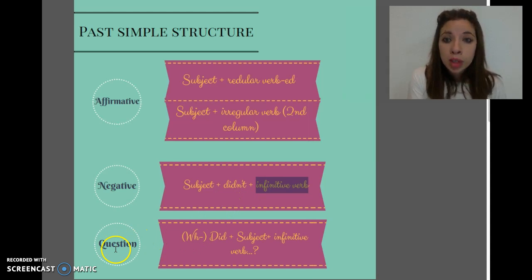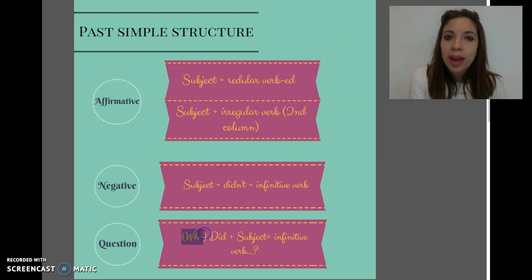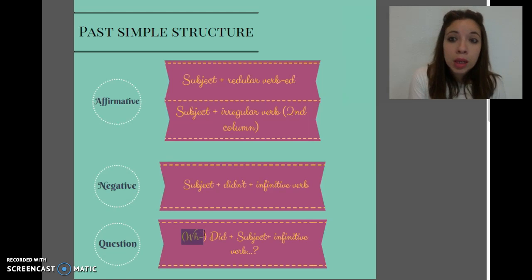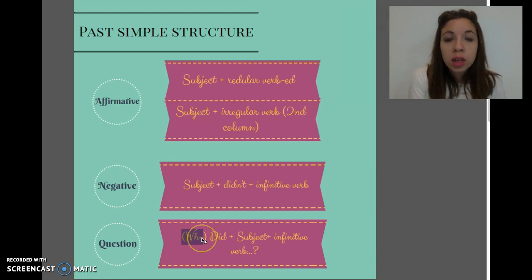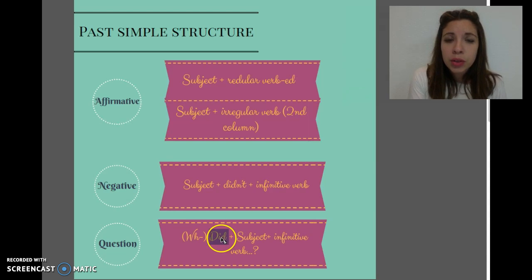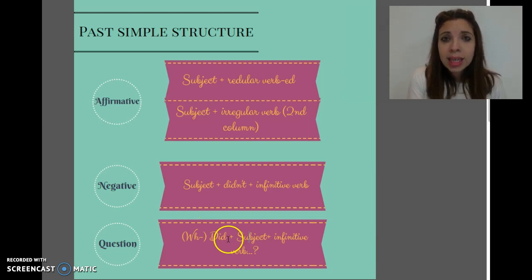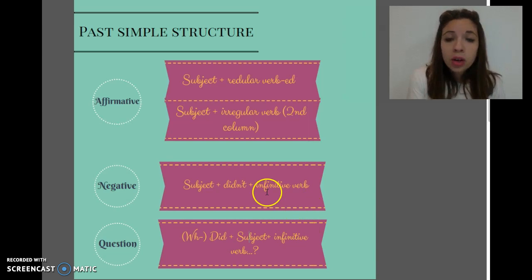When we want to form a question in the past simple, if there is a WH word — and remember, WH words are what, when, where, who, which, how many, how much — that is the first thing you put. Then you continue with the auxiliary "did", followed by the subject, and the infinitive verb. Remember, "did" tells us it's past simple, so you don't need to put the verb with "-ed" or any other endings.